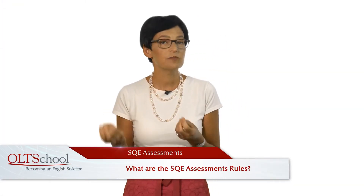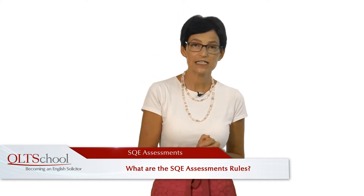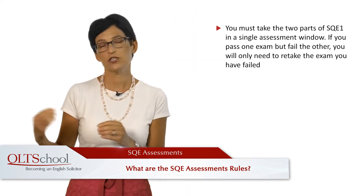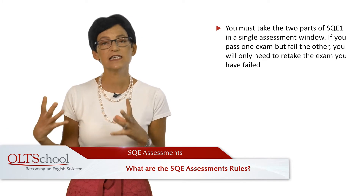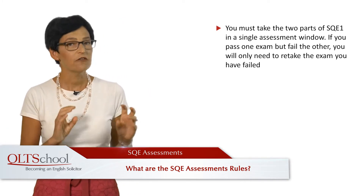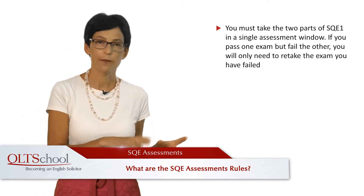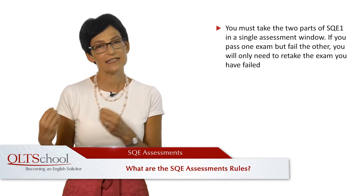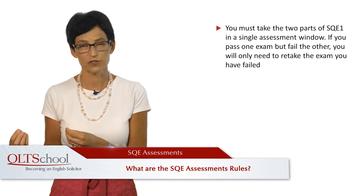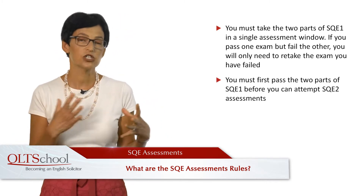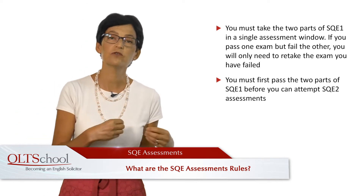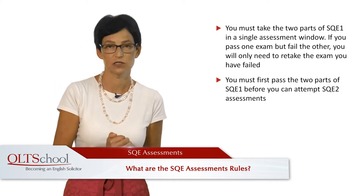There are a few rules you need to be aware of when pursuing the SQE assessments. You must take the two parts of SQE1 in a single assessment window. If you pass one exam but fail the other, you'll only need to retake the exam you've failed. You must first pass the two parts of SQE1 before you can attempt SQE2 assessments.